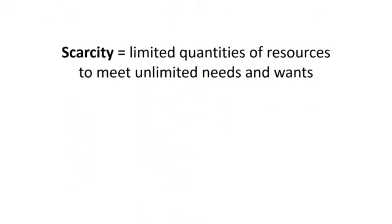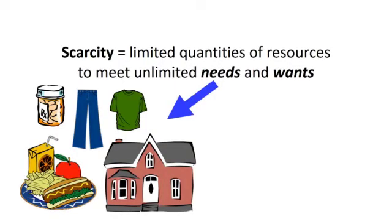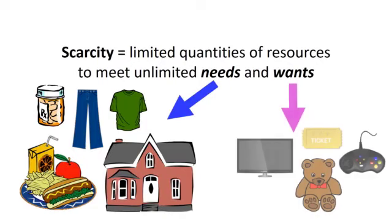Scarcity refers to the fact that there's a limited amount of resources to meet unlimited needs and wants. A need is something that's necessary for survival, like food, shelter, clothing, and medicine. A want is something that we desire but is not essential for survival. Examples of wants would include things like television, teddy bears, concert tickets, and even video games.